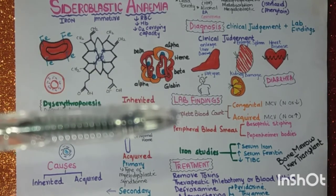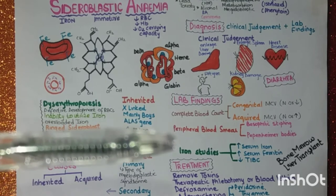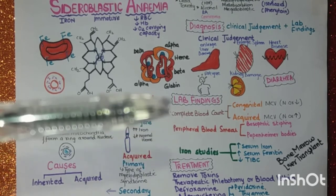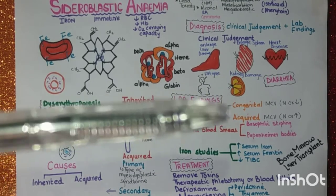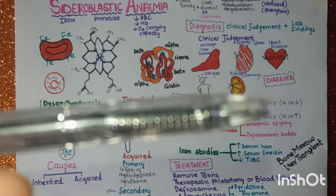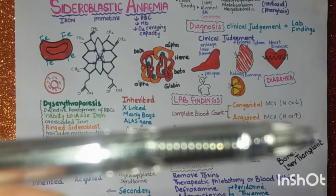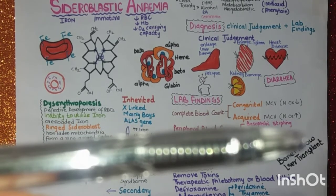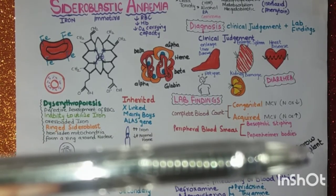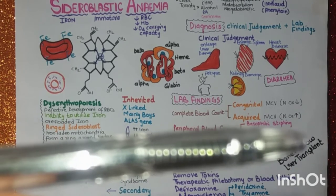In the lab findings, you will do a complete blood count, peripheral blood smear, iron studies, and bone marrow studies. In the CBC, you will find a dimorphic picture. In congenital cases, MCV will be normal or decreased; in acquired cases, MCV will be normal or increased.